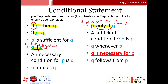A conditional statement must contain two parts: the hypothesis in the 'if' clause and a conclusion in the 'then' clause. For instance: if it is raining then they cancel school — 'if it is raining' is the hypothesis and 'cancel school' is the conclusion.